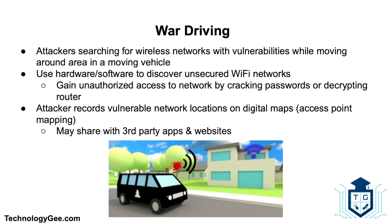War driving involves attackers searching for wireless networks with vulnerabilities while moving around an area in a vehicle. The attackers use hardware and software to discover unsecured Wi-Fi networks and gain unauthorized access by cracking passwords or decrypting the router. The attacker then records vulnerable network locations on digital maps known as access point mapping and may share that information with third-party applications and websites. War driving can have several variations depending on the mode of transport, such as war biking, war cycling, war railing, war jogging, and war walking.